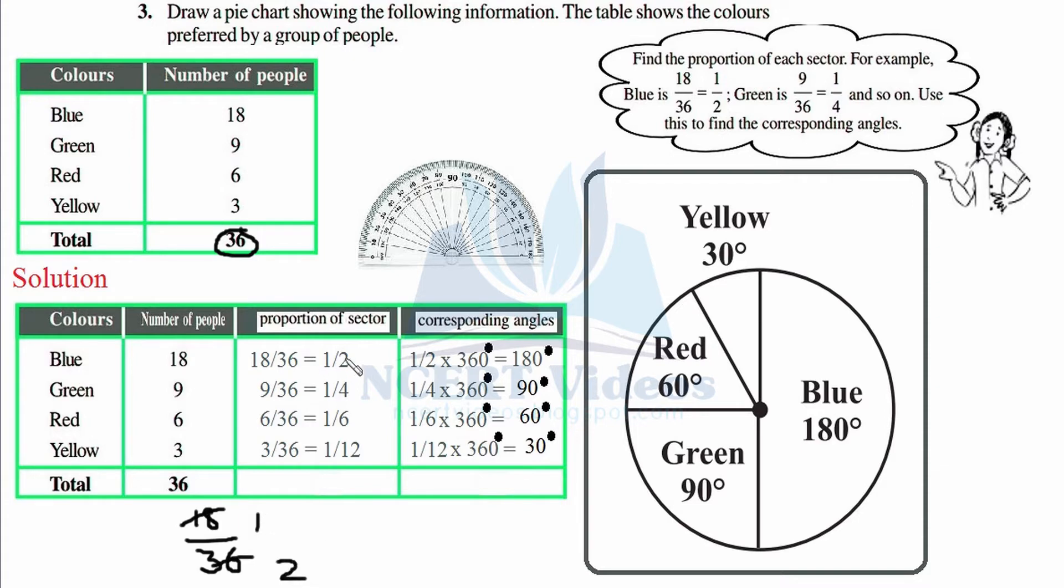How we simplify: 18 is a multiple of 18 and 18 goes into 36 twice, so 1 over 2. You can do it in a rough space and write it like this to make your work tidy. Rough space is always written on the side of the page. Now for corresponding angles, since we found 1 over 2, we multiply it with the central angle to find our sector angle.